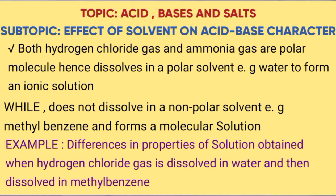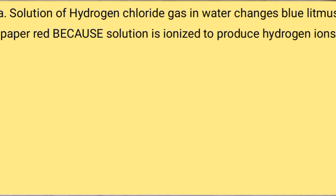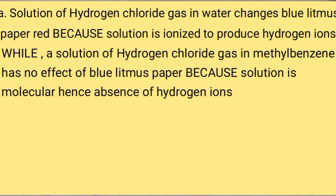Differences in properties of solution obtained when hydrogen chloride gas is dissolved in water and then dissolved in methylbenzene. A solution of hydrogen chloride gas in water changes blue litmus paper red because it is ionized in solution to produce hydrogen ions. While a solution of hydrogen chloride gas in methylbenzene has no effect on litmus paper because the solution is molecular, with an absence of hydrogen ions.